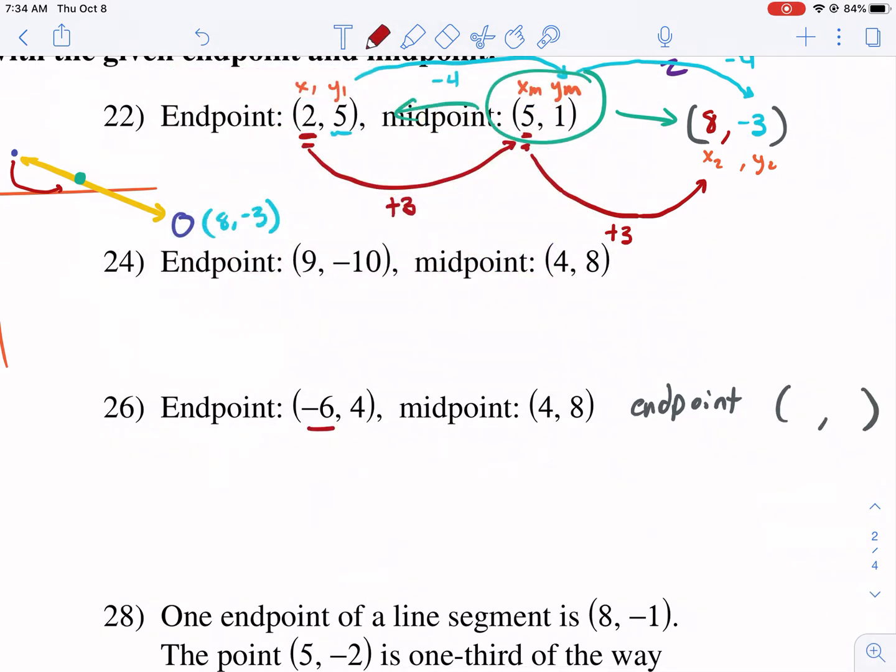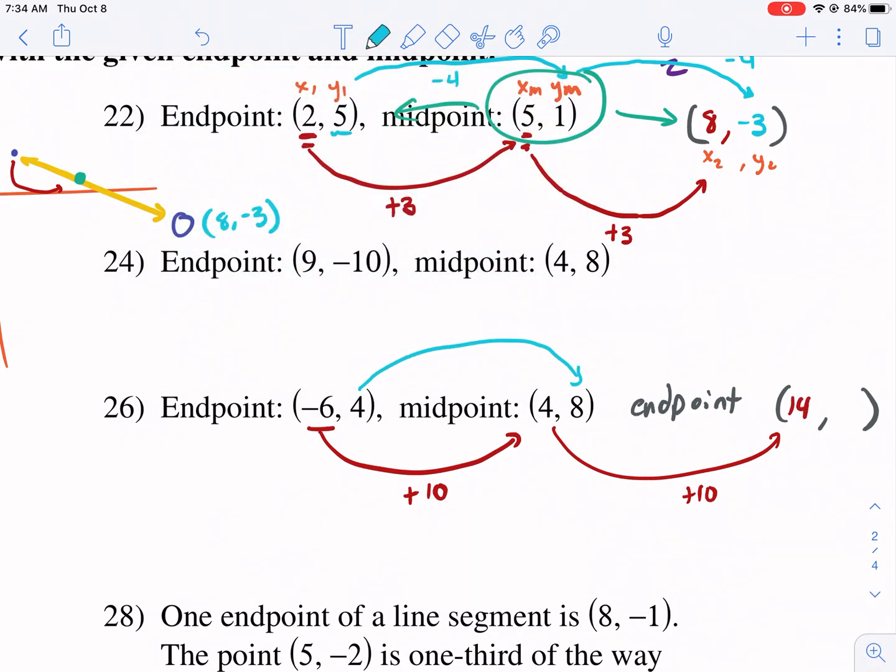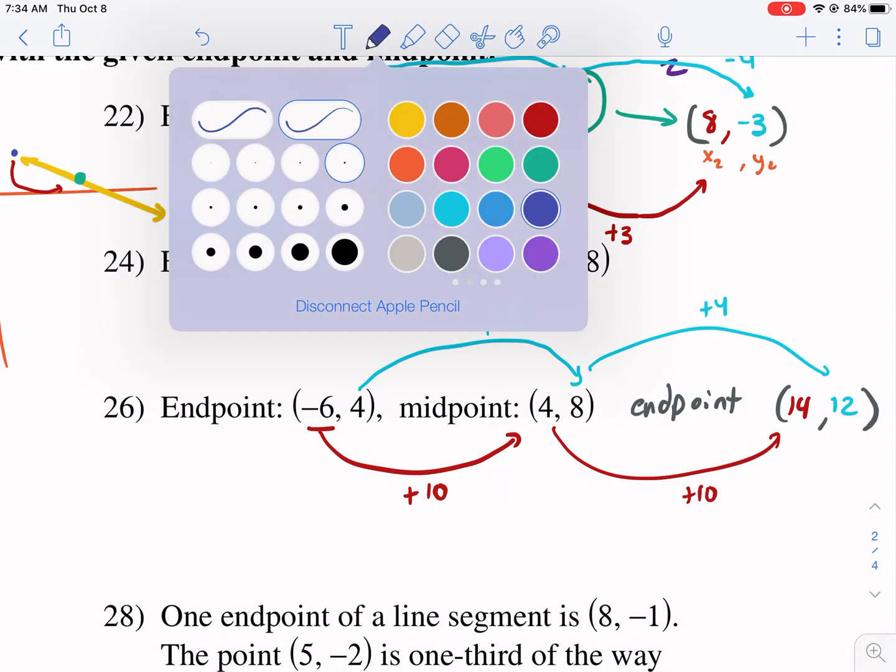Okay, let me start again with my X. I go from here to here. What did I do? I went from negative six to four. That is plus 10. So again, I need to add 10 to keep it balanced, to make that the midpoint, and that is gonna give me 14. Then for this guy, I go from four to eight. That's plus four. I do that again to get to the other one, plus four. Eight plus four is 12. There is my other endpoint.